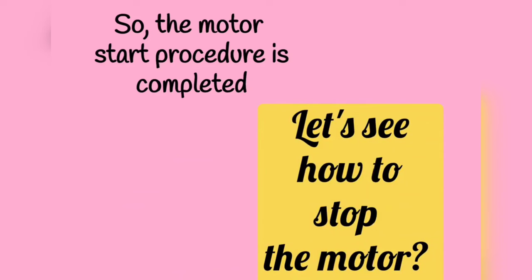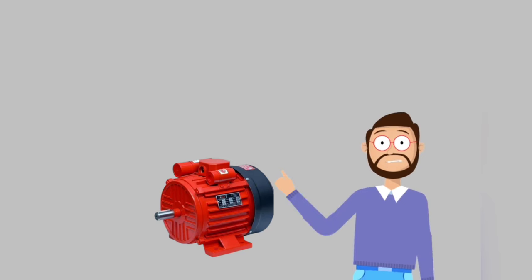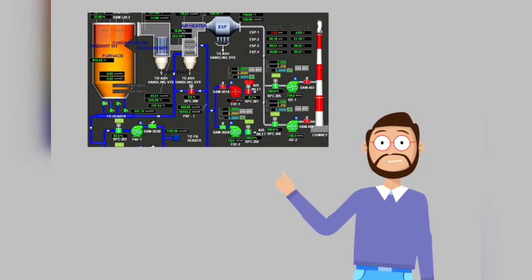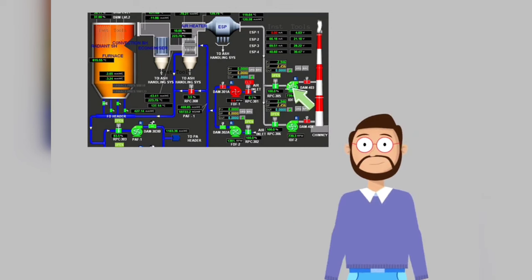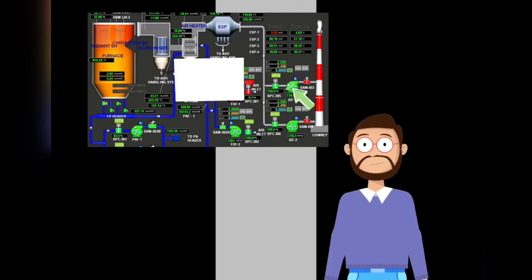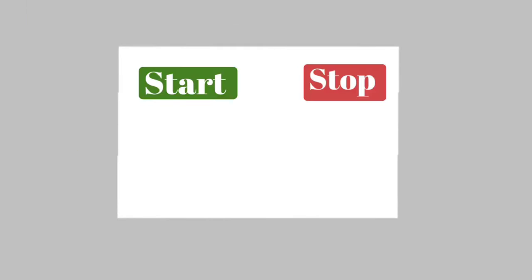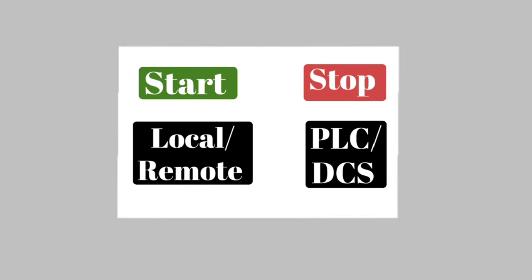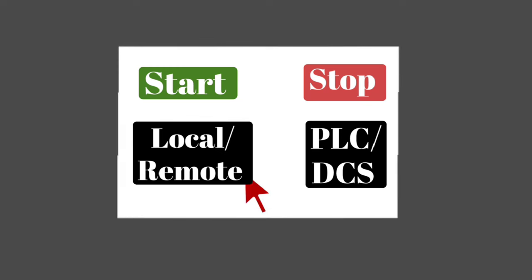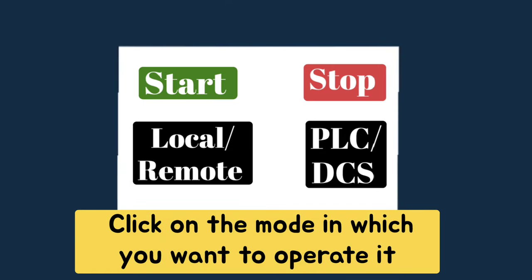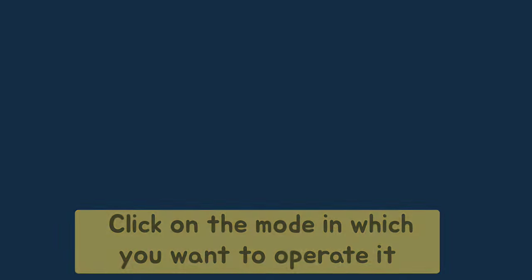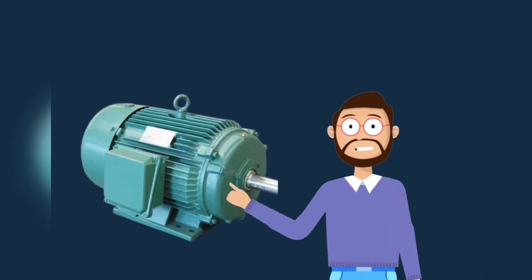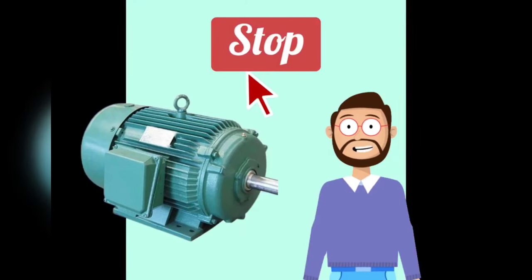Now let us understand how to stop the motor. Whenever the motor has to be stopped, the command is given from SCADA. For that, the motor icon is clicked. When we click on the motor icon, a small window opens. Usually, we get 4 options in it: Start, Stop, Local, Remote, and PLC/DCS. By clicking on Start, the motor starts. By clicking on Stop, the motor stops. Local/Remote means the motor will operate in local or remote mode. PLC/DCS means the motor will operate from PLC/DCS. If you want to operate a motor from PLC, it is necessary to keep it in PLC/DCS mode. Now, suppose we want to stop the motor — the stop icon will be clicked.